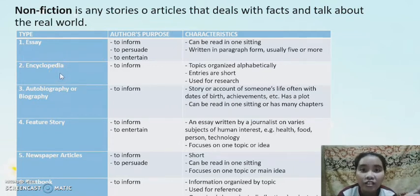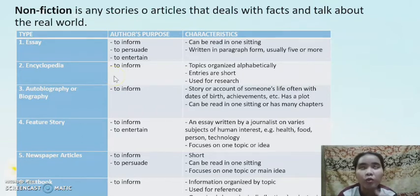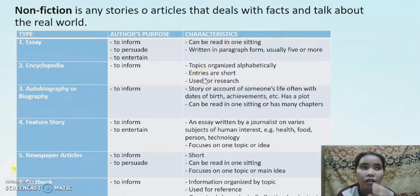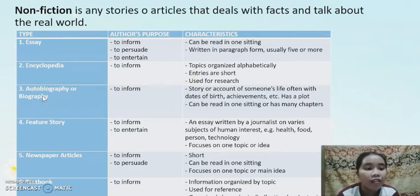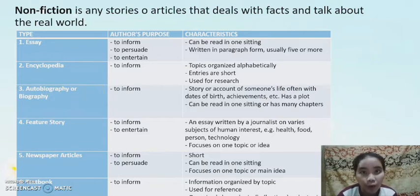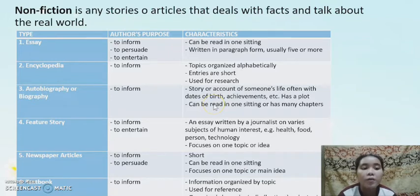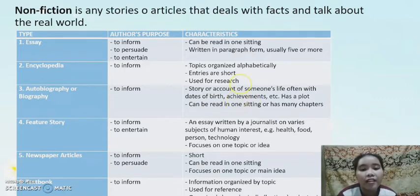The second type is the encyclopedia. Its purpose is to inform. Topics in an encyclopedia are organized alphabetically, entries are short, and it is used for research as a reliable source of information. The third type is autobiography or biography, whose purpose is also to inform. It is the story or account of someone's life, often with dates of birth, achievements, and more. It has a plot and can be read in one sitting or across many chapters.